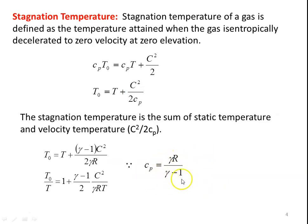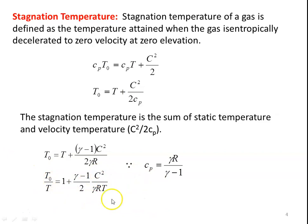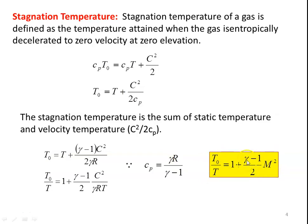Now, Cp = γR/(γ-1), which can be derived from Cp - Cv = R. Substituting Cp in the temperature equation and taking T to the left side, we get T0/T = 1 + (γ-1)/2 · C²/(γRT). Since γRT = A² (where A is the acoustic velocity, i.e., speed of sound = √(γRT)), the term C²/(γRT) becomes M² (Mach number squared). So T0/T = 1 + (γ-1)/2 · M², where T0 is stagnation temperature, T is static temperature, M is Mach number, and γ is the specific heat ratio.